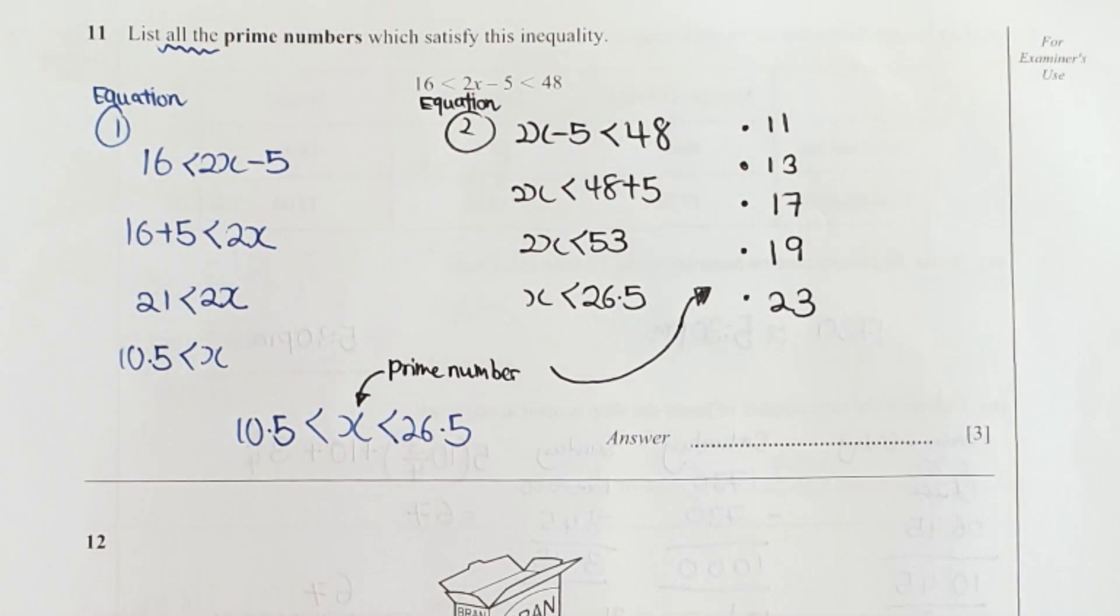Question 11 is required to break it down into two separate inequalities. The first one, 16 less than 2x minus 5, your x value will be more than 10.5. The next one is 2x minus 5 less than 48, x is less than 26.5. So the prime numbers in between these inequalities will be 11, 13, 17, 19, and 23.